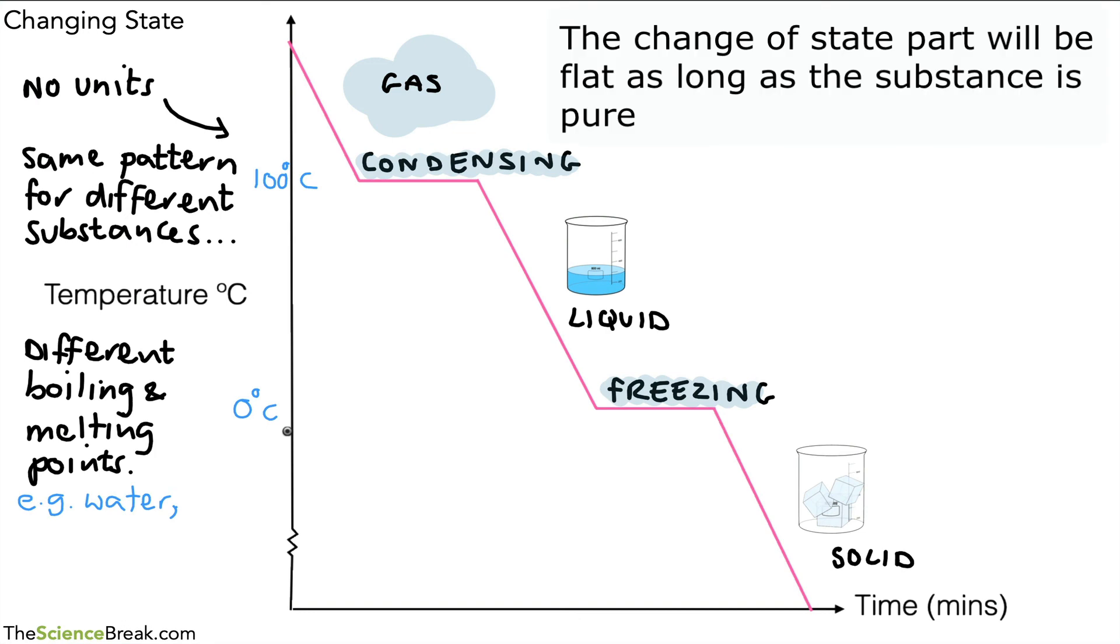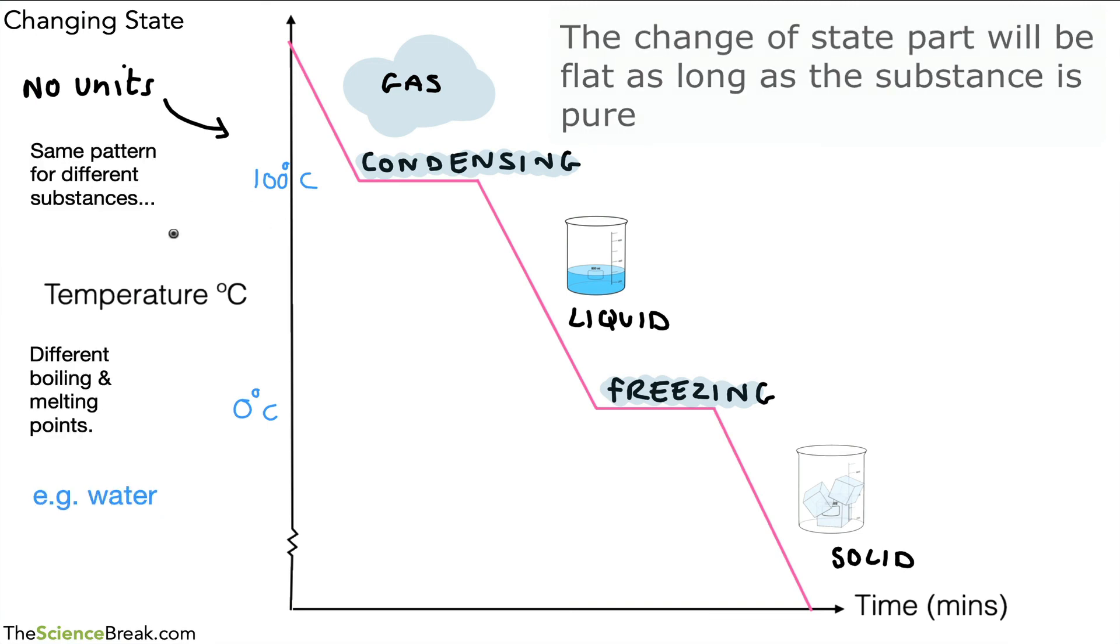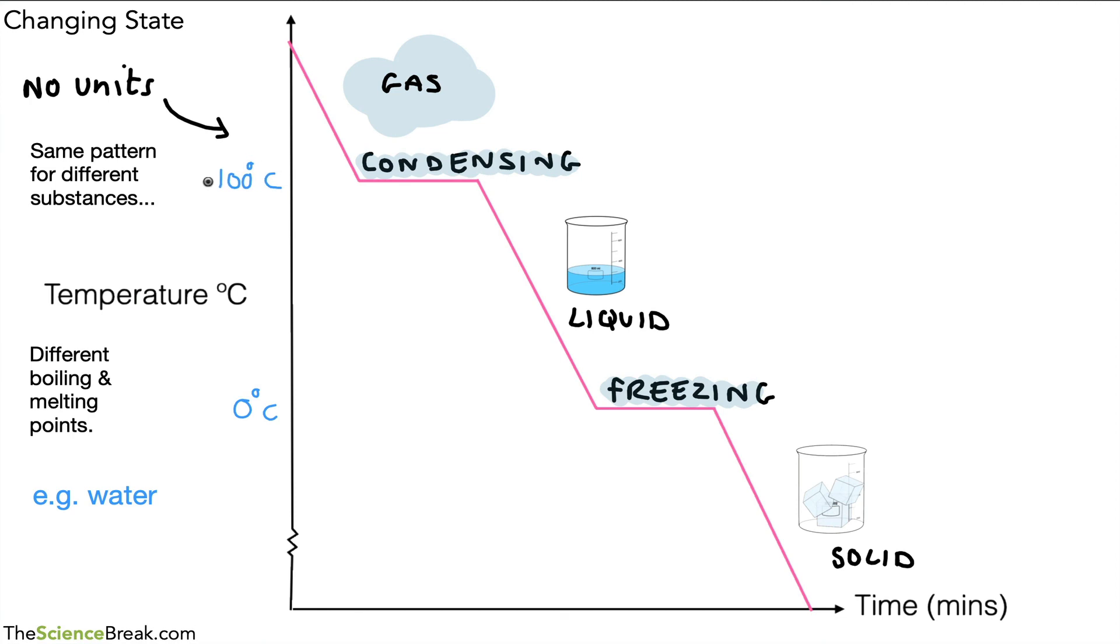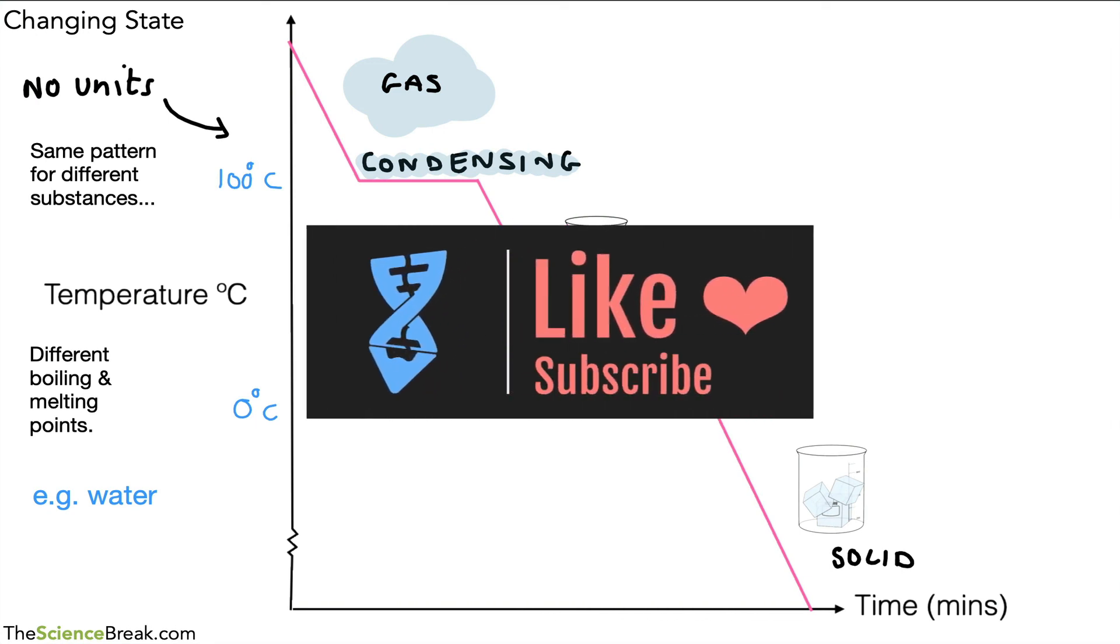So let's just tidy up that writing a little bit. It looks a bit untidy to me. And move over the 100 degrees C a little bit. And there we have it. The graphs for changing of state when we're heating and when we're cooling. And the key terms involved when we're making these descriptions. Thanks for watching and I'll catch you in the next one.